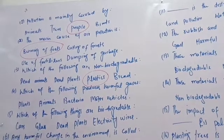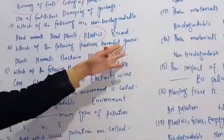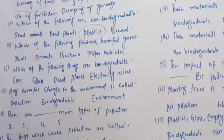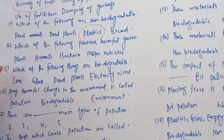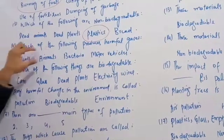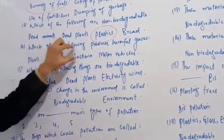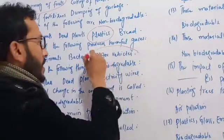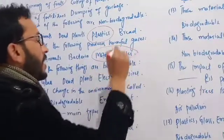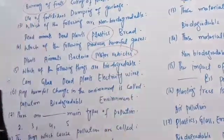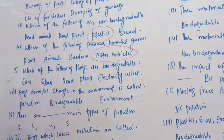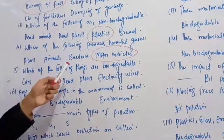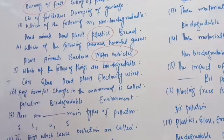Question 4: Which of the following produces harmful gases? The options are plants, animals, bacteria, and motor vehicles. Motor vehicles — cars, buses, etc. — produce harmful gases and are the correct answer.